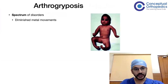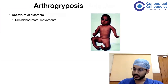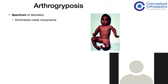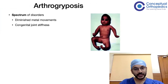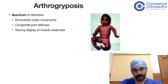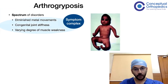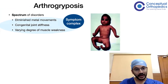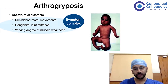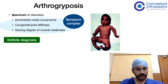Arthrogryposis is characterized by diminished fetal movements, congenital joint stiffness, and varying degrees of muscle weakness. It is a symptom complex which has varying degrees of these three particular symptoms.